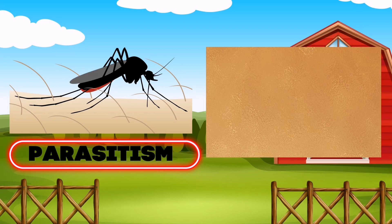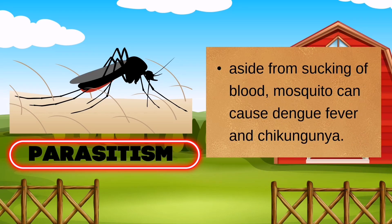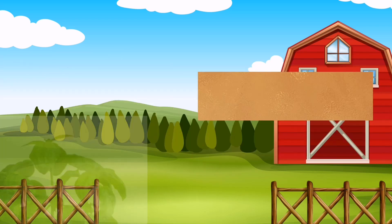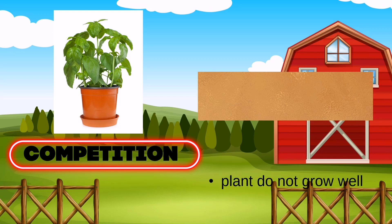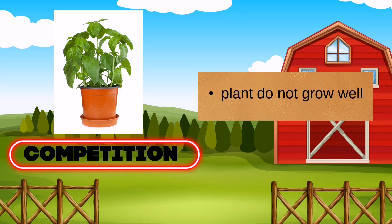The next interaction is parasitism. The possible effect, aside from sucking of blood, is that mosquitoes can cause dengue fever and chikungunya. And the last interaction is competition — the effect is that plants do not grow well. The types of interactions in the ecosystem can have certain effects on organisms' survival rate and the environment. These effects could either be beneficial or harmful. Whether beneficial or harmful, we as humans need to care for and protect the organisms and the environment where they live and thrive, for future generations to come.